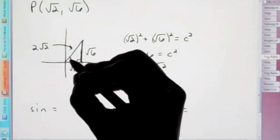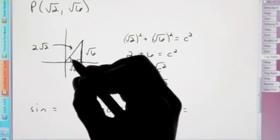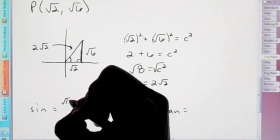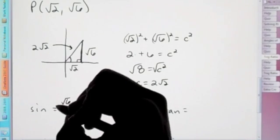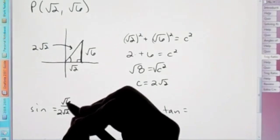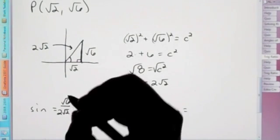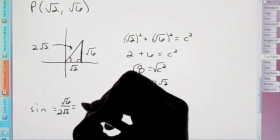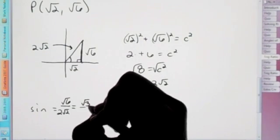So our sine from our terminal angle is going to be opposite, so root 6 over hypotenuse, which is 2 root 2. And remember, whenever you have a root over another root, you can divide those. So our final answer would be root 3 over 2.